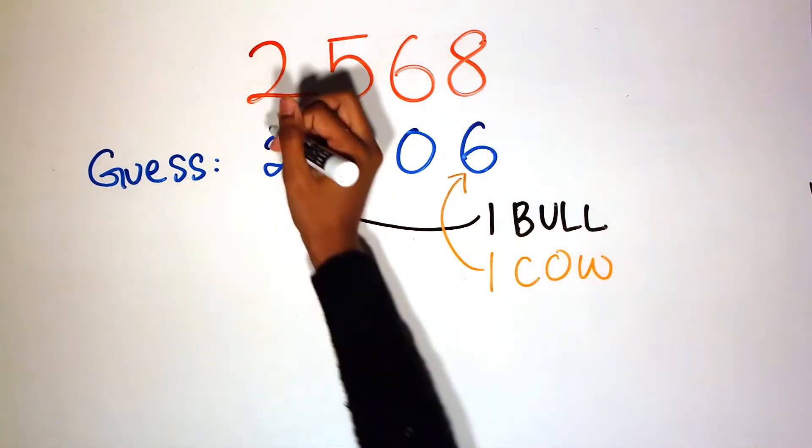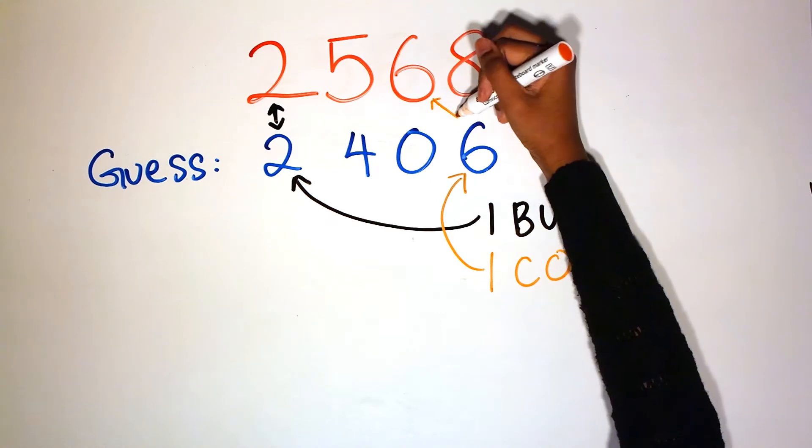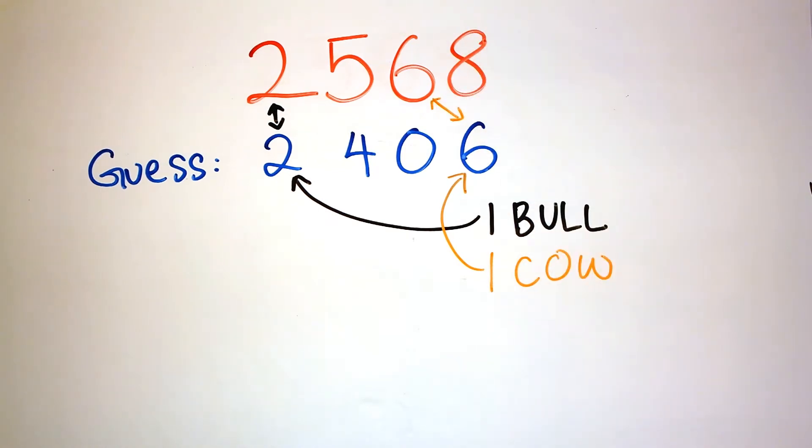If the number is correct and in the right place, this is called a bull. If the number is correct but in the wrong place, this is called a cow.